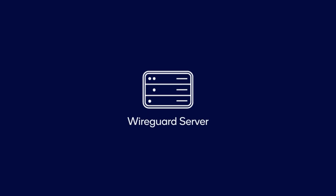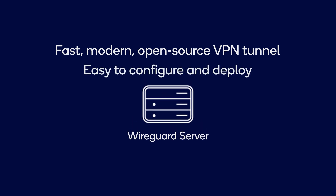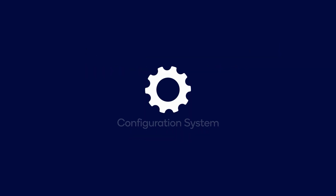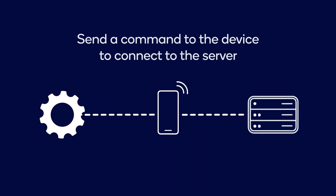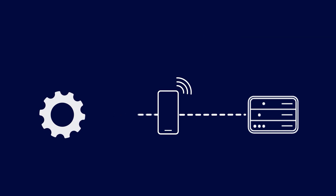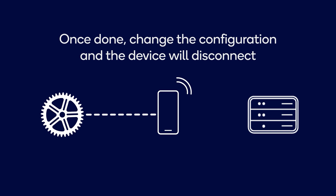The Foundries Factory can provide remote access for managing devices. To access the platform remotely, you can set up a WireGuard server. WireGuard is a fast, modern, and open source VPN tunnel that is easy to configure and deploy. Then, you can use the configuration system to send a command to the device, instructing it to connect to the server that has been configured. Once you're done, you can change the configuration again and the device will disconnect. This makes it easy to manage a fleet of edge devices.